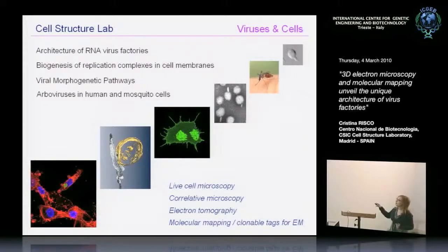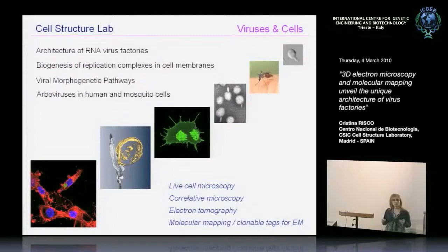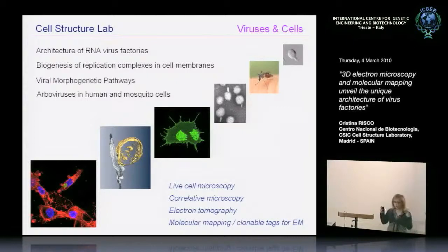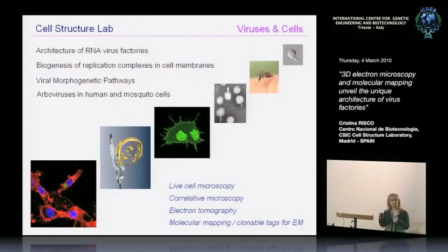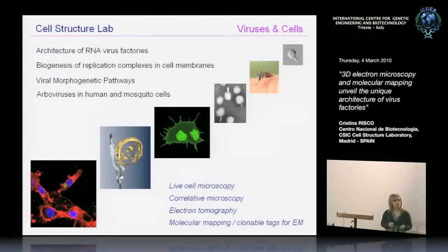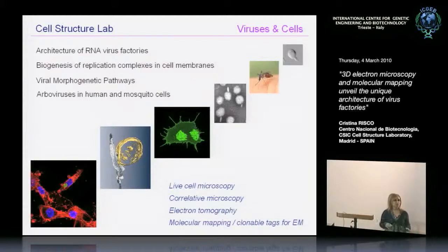To develop these biological projects, we have incorporated a number of microscopy techniques during the last ten years, such as live cell microscopy, correlative microscopy — that is to select a particular cell or structure in a live cell by light microscopy and to study it at high-resolution electron microscopy — also electron tomography for 3D reconstruction and analysis of whole cells, and more recently molecular mapping of complex volumes generated by electron tomography using clonable tags for EM, something like GFP but for ultrastructure.